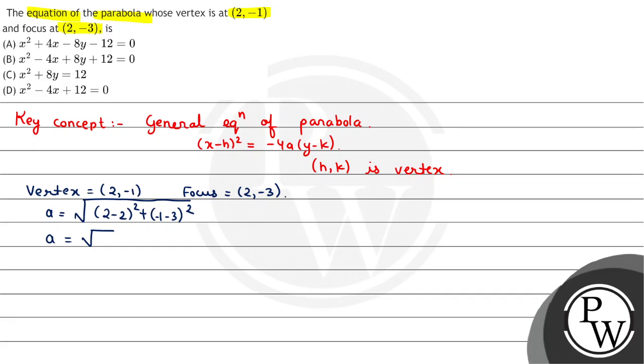Here a will be -1 minus -3, which is 2. So a is equal to 2, h is 2, and k is -1. We will put these values in the general equation of parabola.